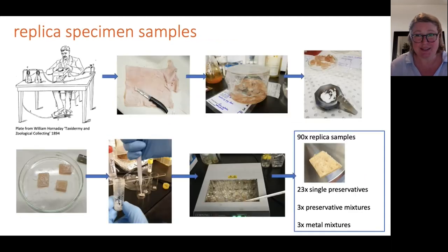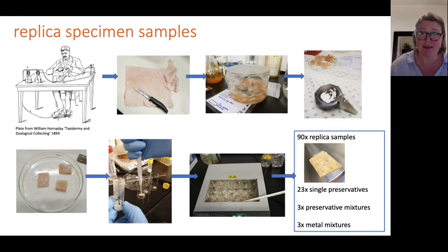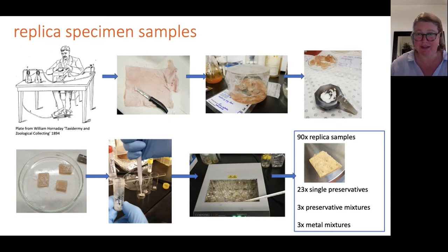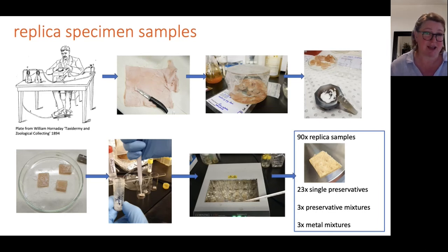Guided by 18th and 19th century instruction manuals, I made 90 replica skins using pigskin from the butcher. After cleaning the flesh and placing the skin in a bath, I created preservative mixtures and applied them in a way that was safe but closely replicated hand or brush application. The skin was then artificially aged to allow the preservatives to take effect. These replicas now form a reference dataset to help disentangle spectroscopic peaks generated by chemical mixtures.